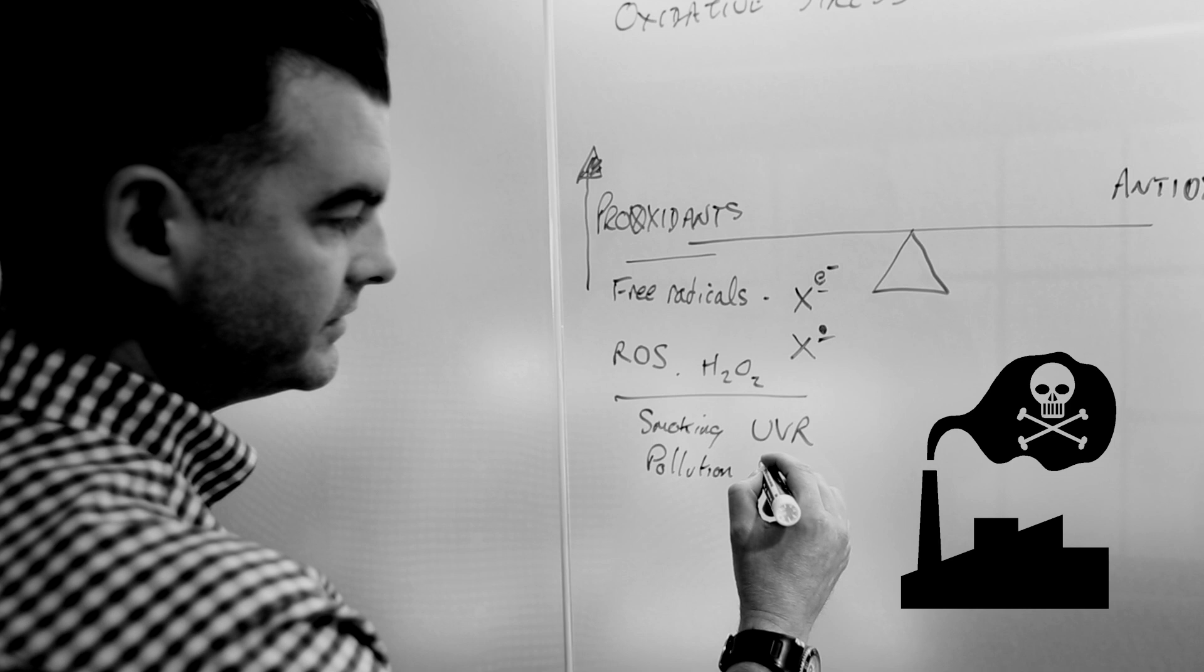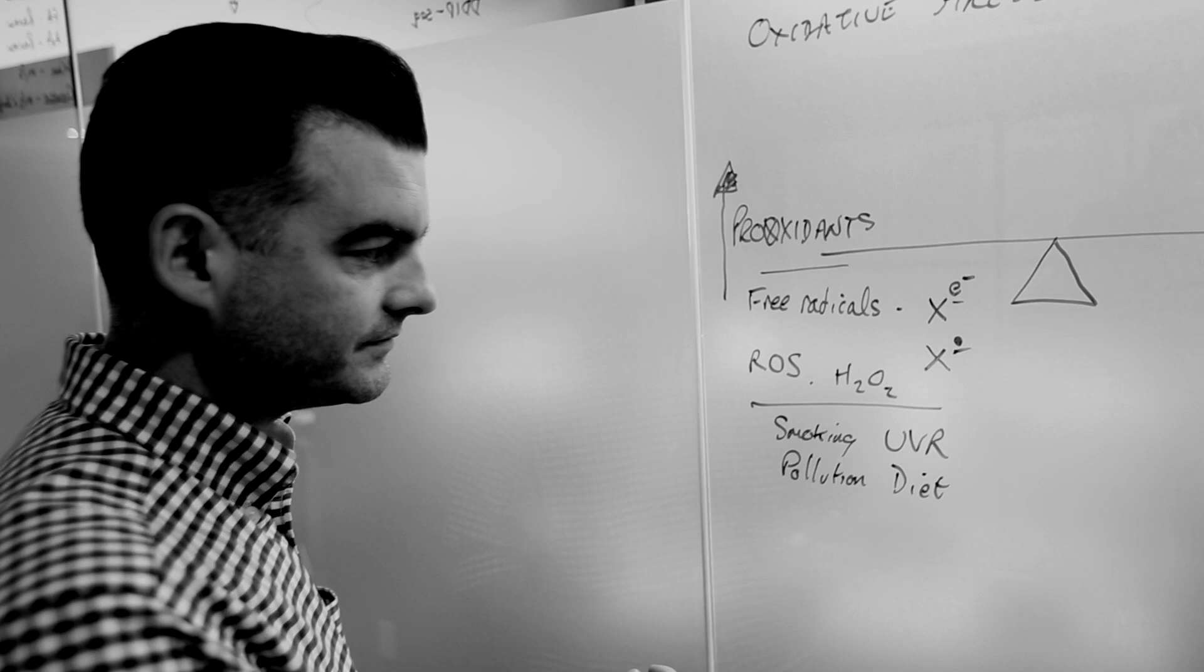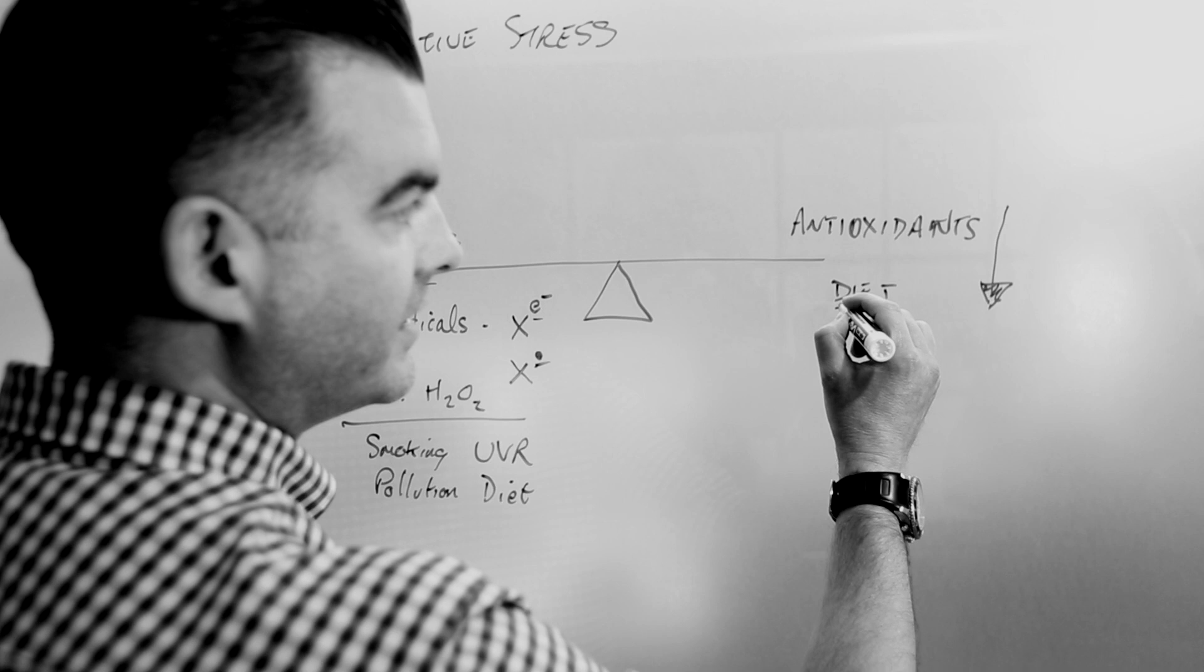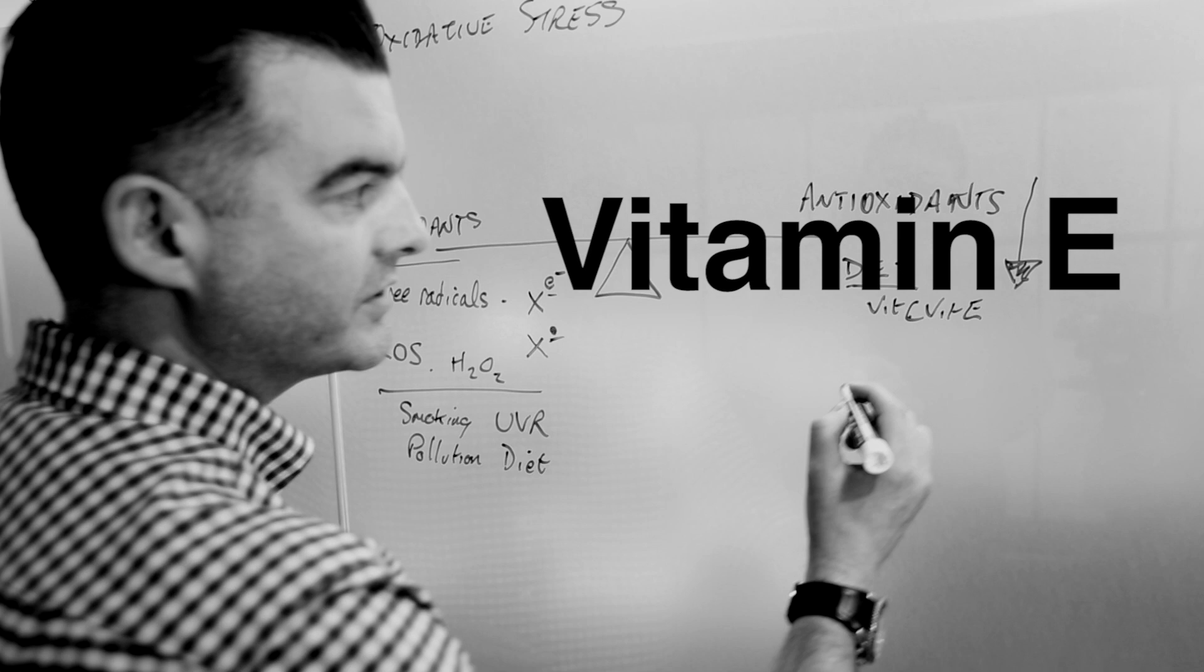pollution, diet - really many things in the environment and our lifestyle can lead to these free radicals and reactive oxygen species, increasing the pro-oxidants. On the other side, antioxidants - there's diet, and you can think of vitamin C, vitamin E, and so on. But there